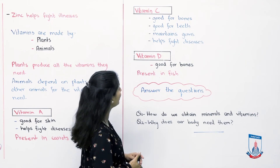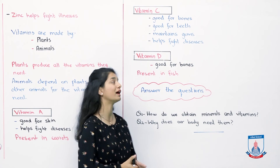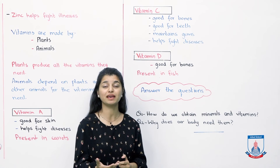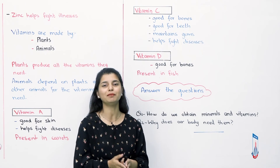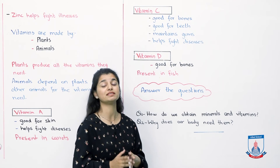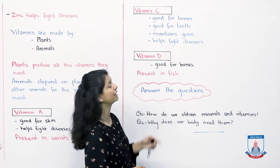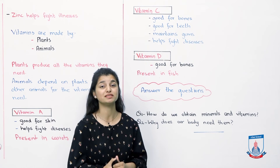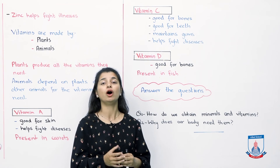Let's look at vitamin D, which is also very good for your bones. You can get vitamin D from sunlight — when you take in the sun's rays in healthy weather, your body produces vitamin D. It is also present in fish, so eating fish is another way to get vitamin D, which is very good for your bones.